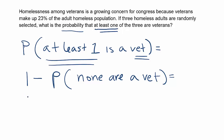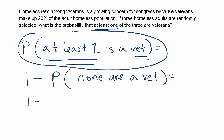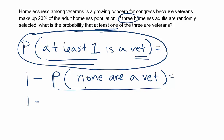From here, it'll be one minus the probability that none are vets. So my work is to figure out this probability — the probability that none of the three are vets. We'll go back to how many were selected: three. So this probability is essentially the probability that all three randomly selected homeless people are not veterans. Because we're selecting three, we're going to need three fractions or three probabilities multiplied together.